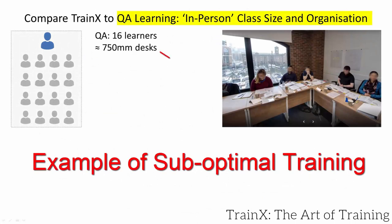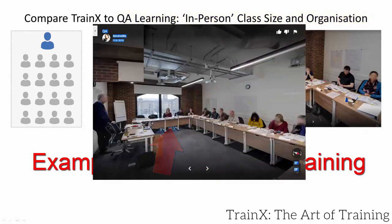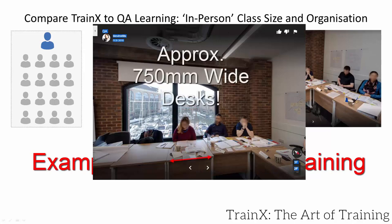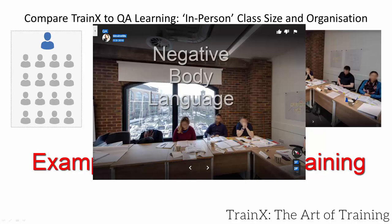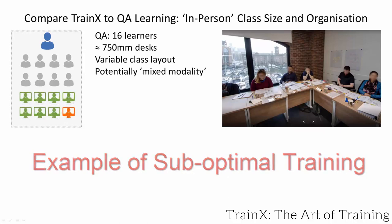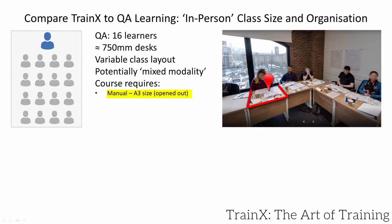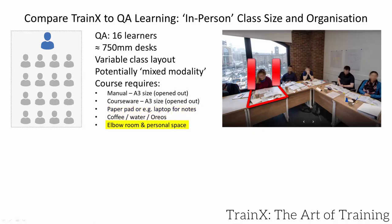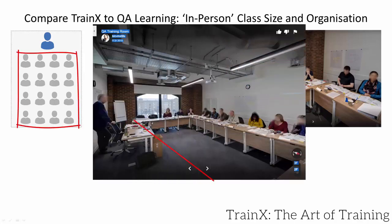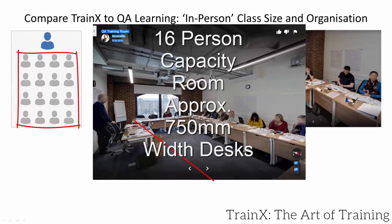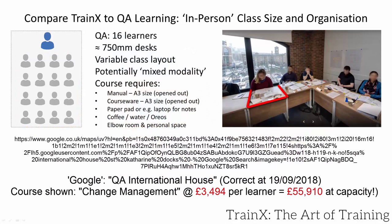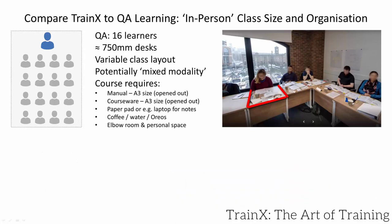Successful training requires facilities that allow learners to comfortably focus on the instructor, the learning materials and instructional media. Cramped conditions and sub-optimal seating arrangements which force learners to sit at an angle for extended periods are counterproductive. Limited workspace where learning materials are not optimally positioned further limits knowledge transfer. Large classroom capacities degrade performance.